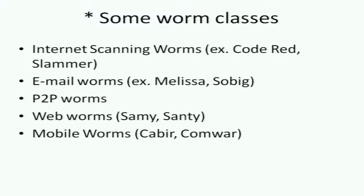Going down specifically to worms: some different classes include internet scanning worms — examples are Code Red and Slammer — email worms like Melissa and Sobig, P2P worms like Sammy and Santee, and mobile worms like Kabir and ComWar. When examining case studies, the first question to ask is: what is the vulnerability that caused this attack?